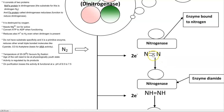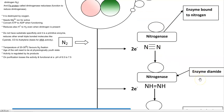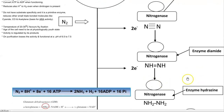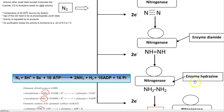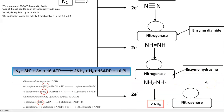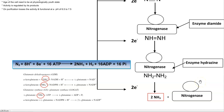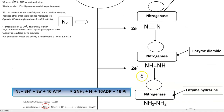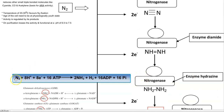In the first step, the triple-bonded nitrogen is converted into enzyme diazene. In the second step, with the addition of electrons, it is converted into enzyme hydrazine, associated with the nitrogenase enzyme. In the final reduction step, it is converted into ammonia. Ammonia has very low affinity for the nitrogenase enzyme, so it leaves the nitrogenase system. Overall, one molecule of nitrogen is converted into two molecules of ammonia by the nitrogenase enzyme, functioning in the presence of energy and electron donors.